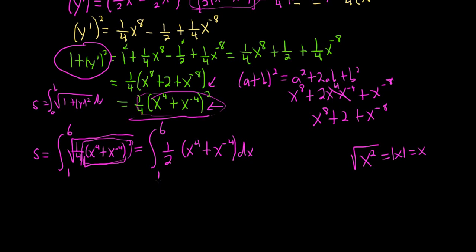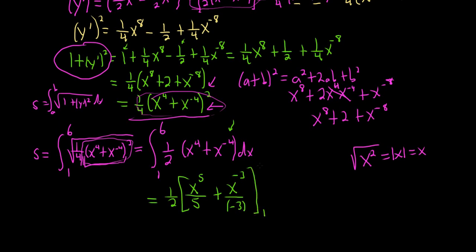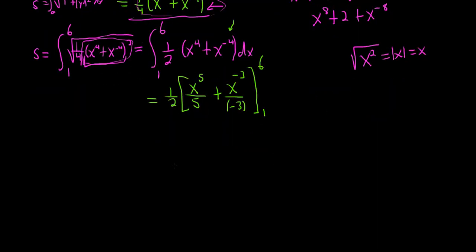At this point we can integrate everything. So this will be 1/2 on the outside, then integrating x to the fourth gives x to the 5 over 5, and integrating x to the negative 4 gives x to the negative 3 over negative 3. We're going from 1 to 6. Distributing the 1/2 gives us 1/10 x to the 5 minus 1/6 x to the negative 3, evaluated from 1 to 6.